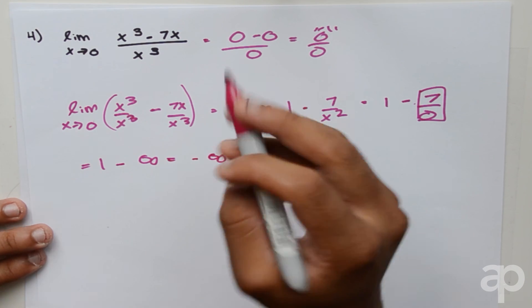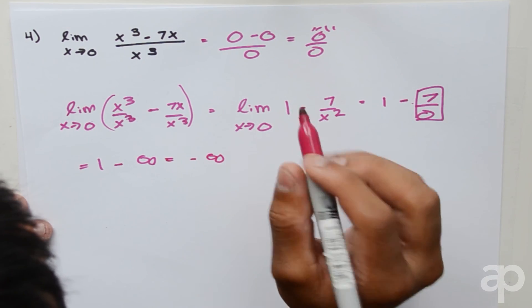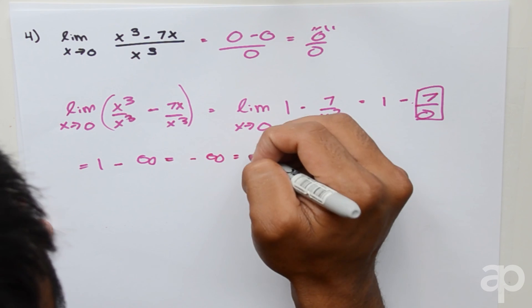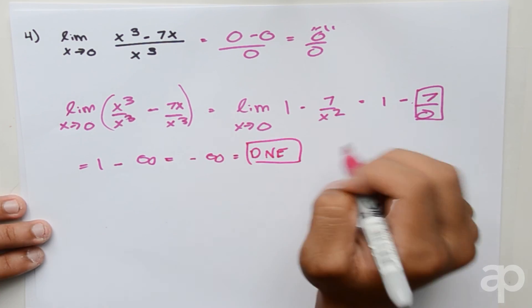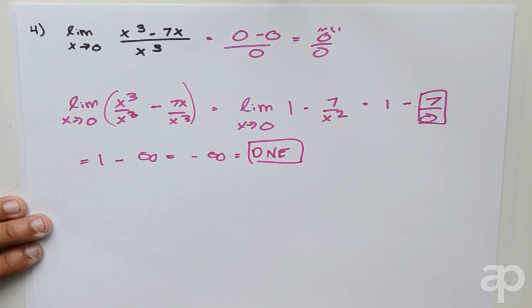A result of negative infinity is also called DNE. So at the end, the limit of this function as x approaches 0 equals DNE.